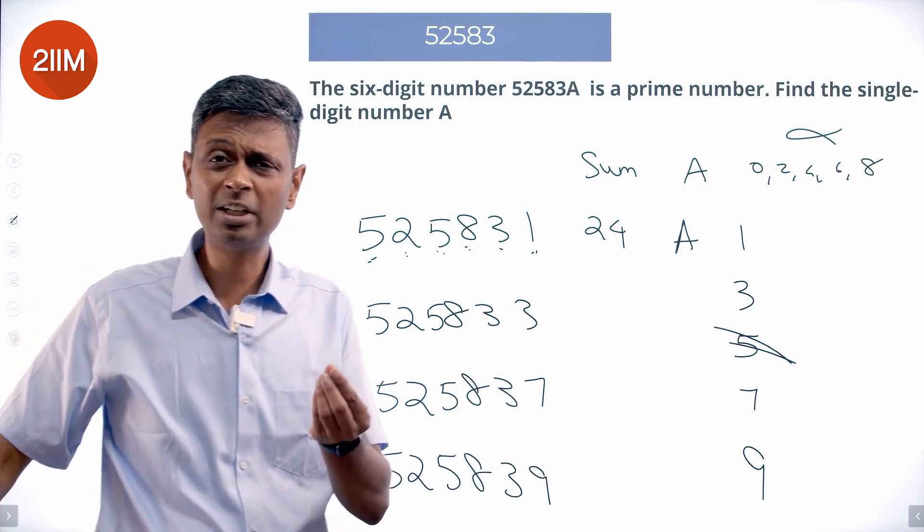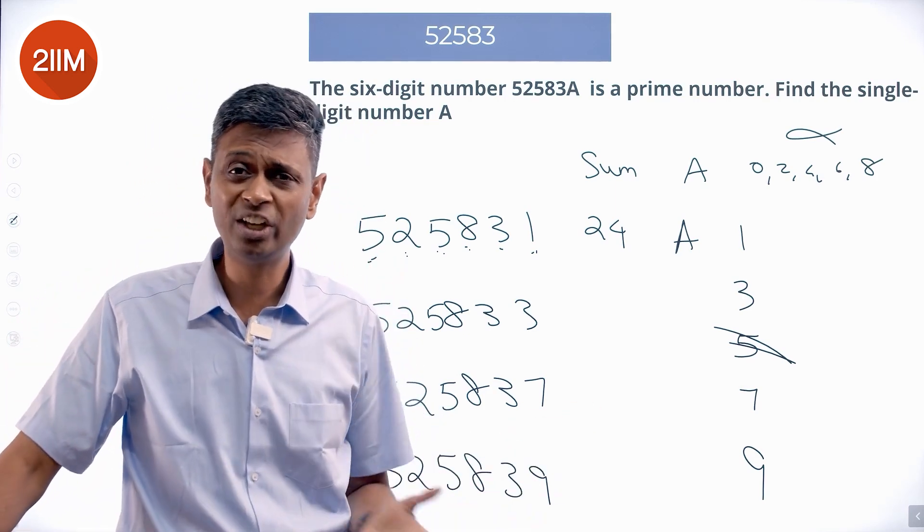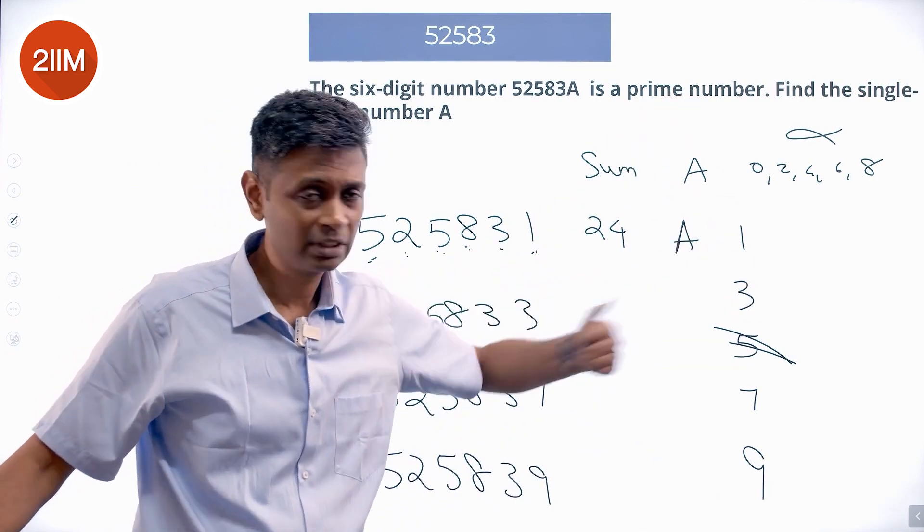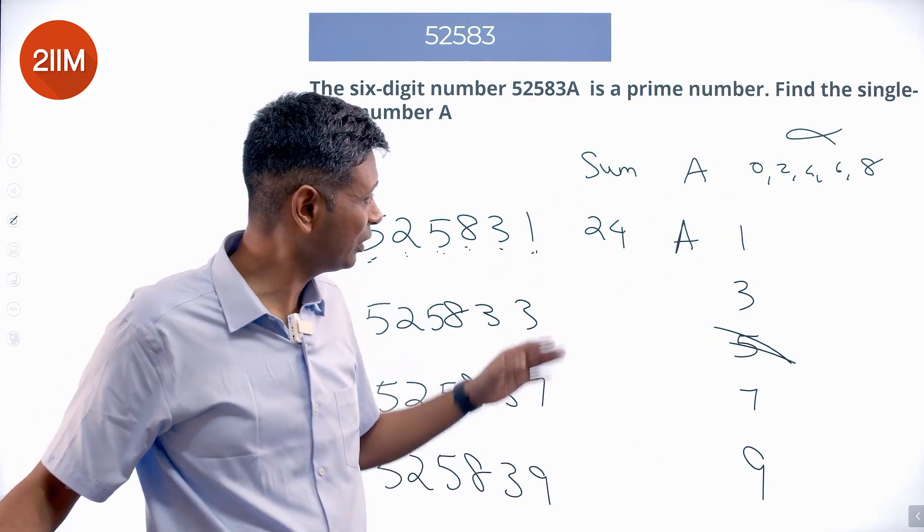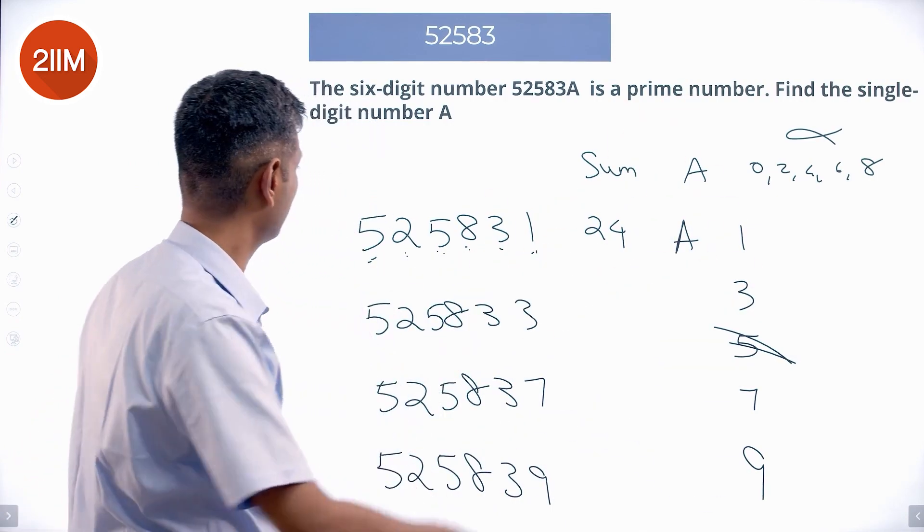Why am I doing sum of the digits? Because I want to verify if it's divisible by 3. Checking for 2 and 5 is very easy—I've already done that. Next I'll check for 3. Sum of the digits is 24, so this number is not prime; it's a multiple of 3.